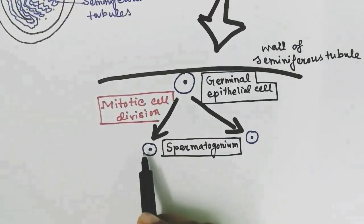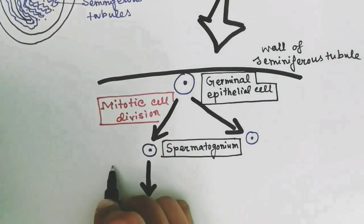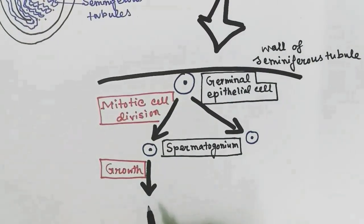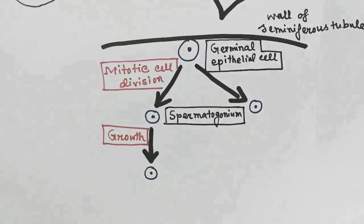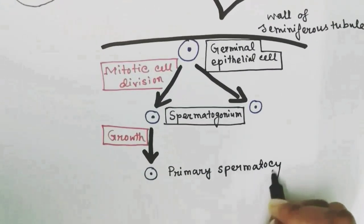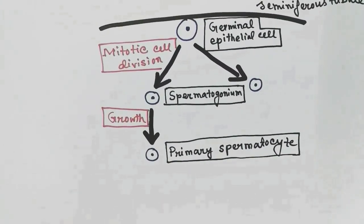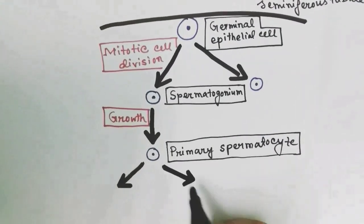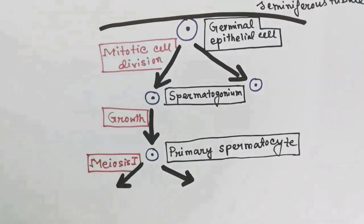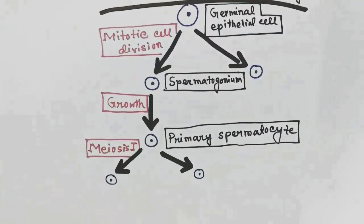The spermatogonium cell goes through a growth phase and forms another type of cell called the primary spermatocyte. After production of the primary spermatocyte, it goes through meiotic cell division, and after the first meiotic division, secondary spermatocytes are formed from primary spermatocytes.